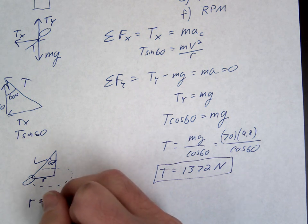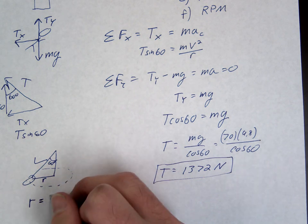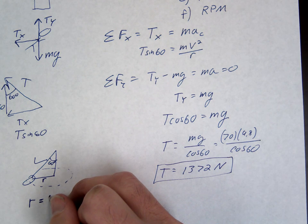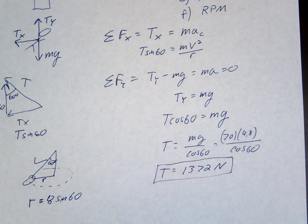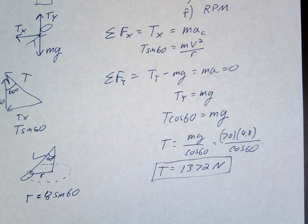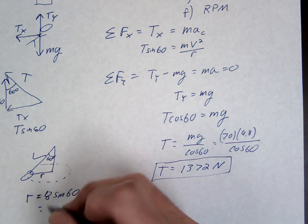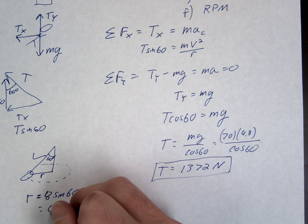Connor, how are we going to find R? Okay, so 8 sine 60. So be careful when you do these. Make sure you realize what the actual radius is. It's like 6 point something.